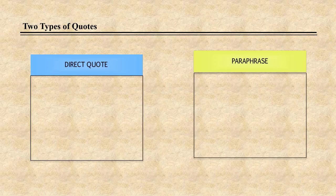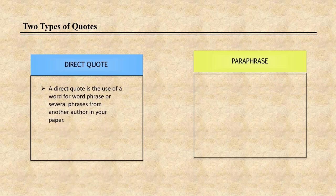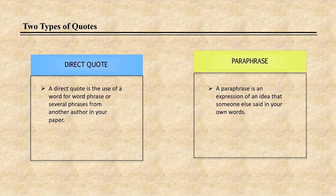There are two different types of in-text citations: a direct quote and a paraphrase. A direct quote is the use of a word, word phrase, or several phrases from another author in your paper. A paraphrase is an expression of an idea that someone else said in your own words. Each appears in your paper in a different way.